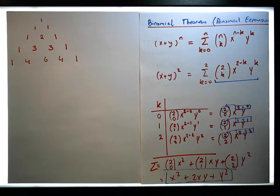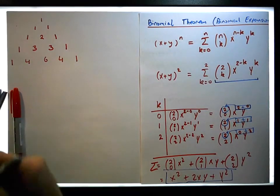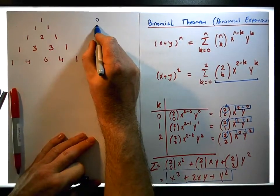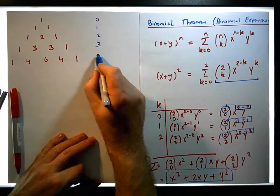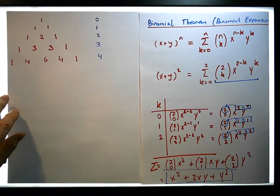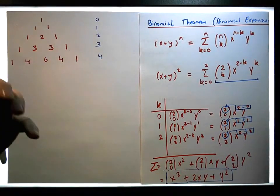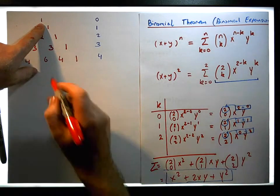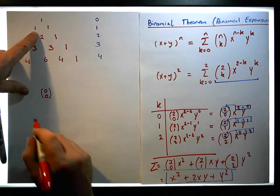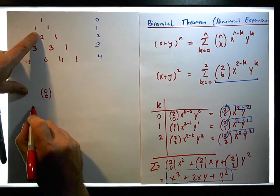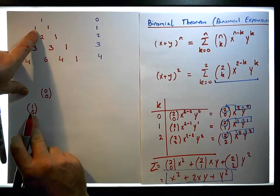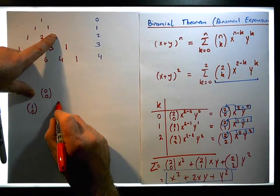Each one of these values is on a particular row. This is row zero, this is row one, this is row two, this is row three, and this is row four. When we look at the terms — remember we always start counting from zero — this term here represents 0C0. This term here is on row one, so this is 1C0, because this is the first entry, with the first entry being the zeroth entry.